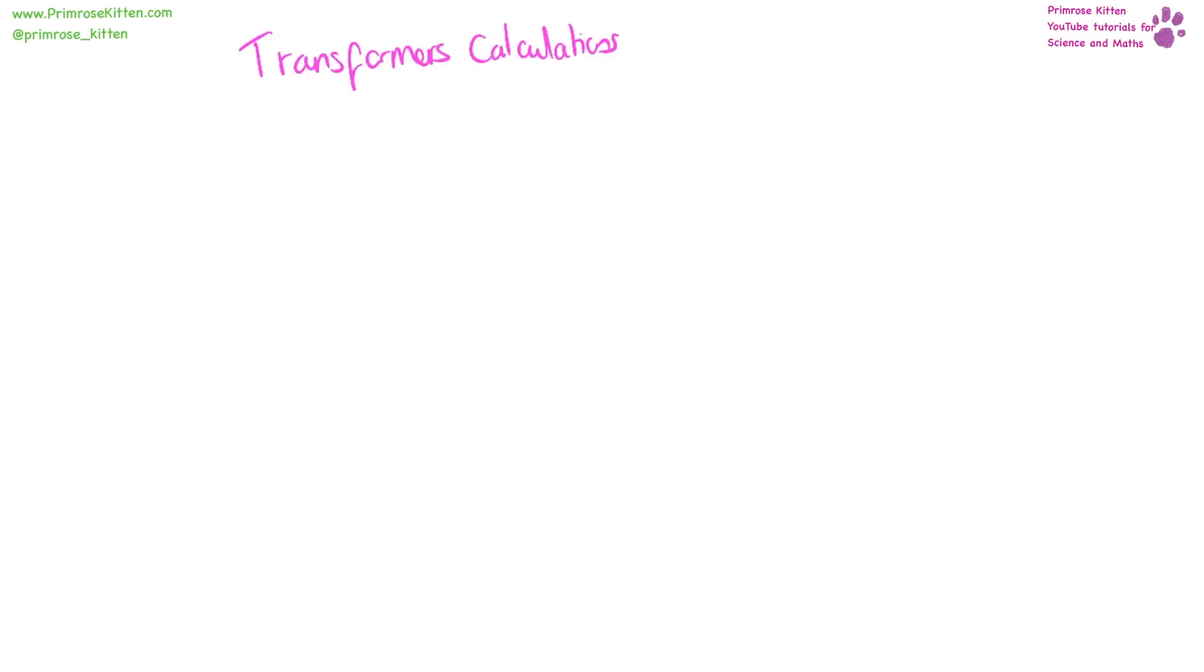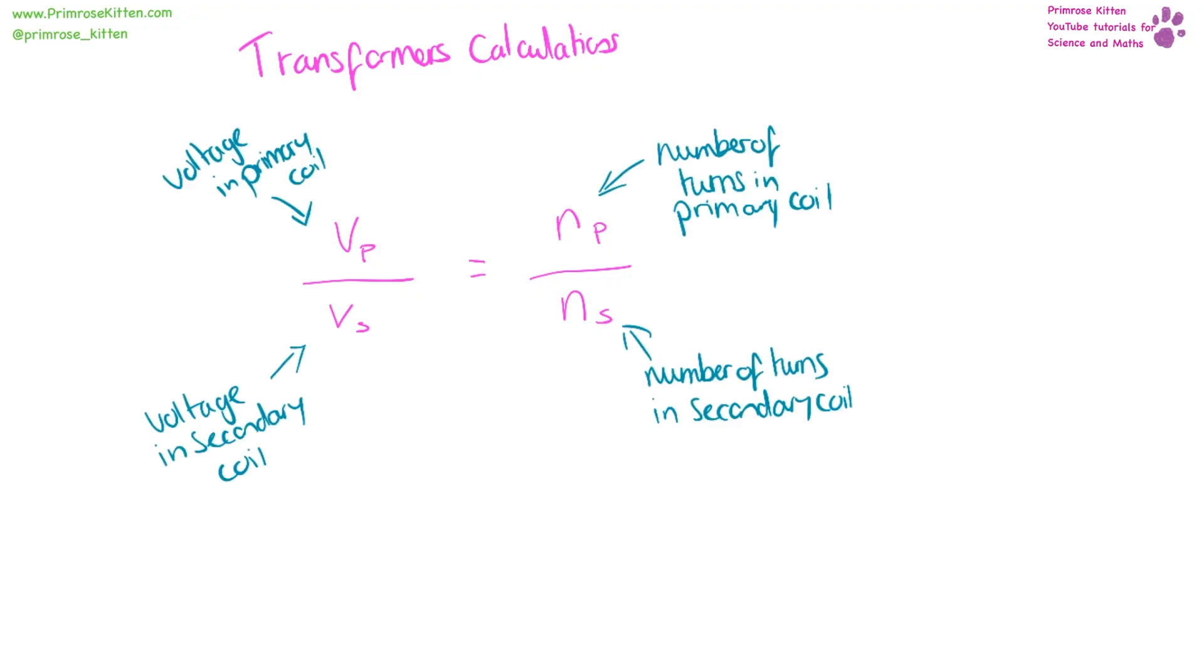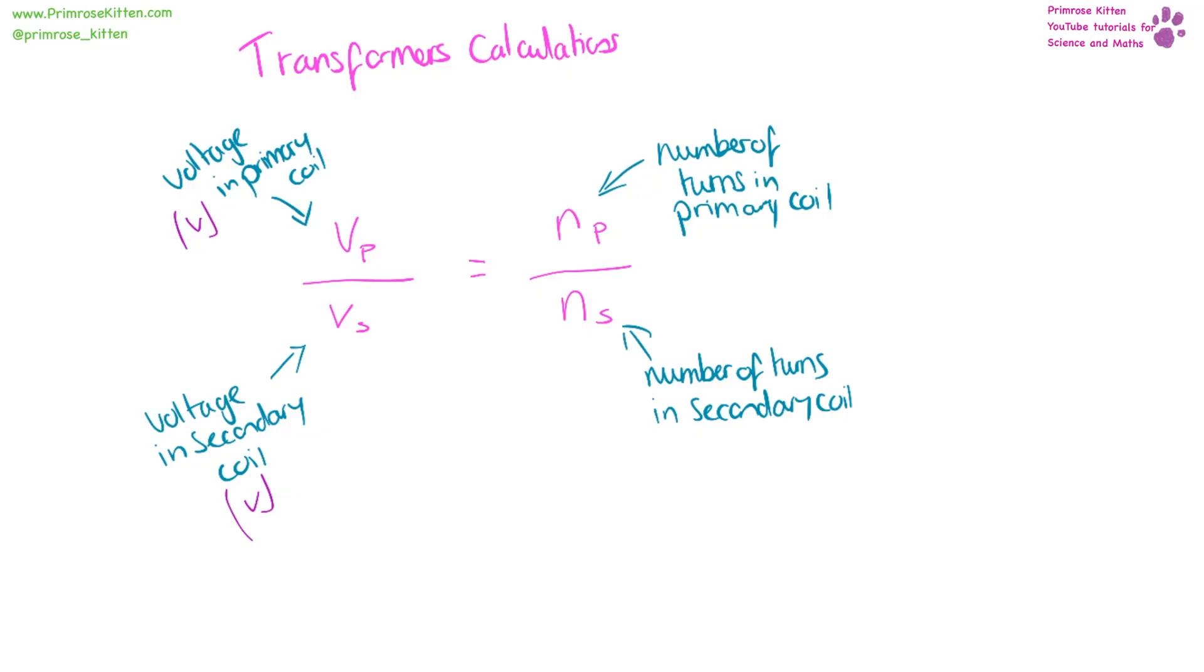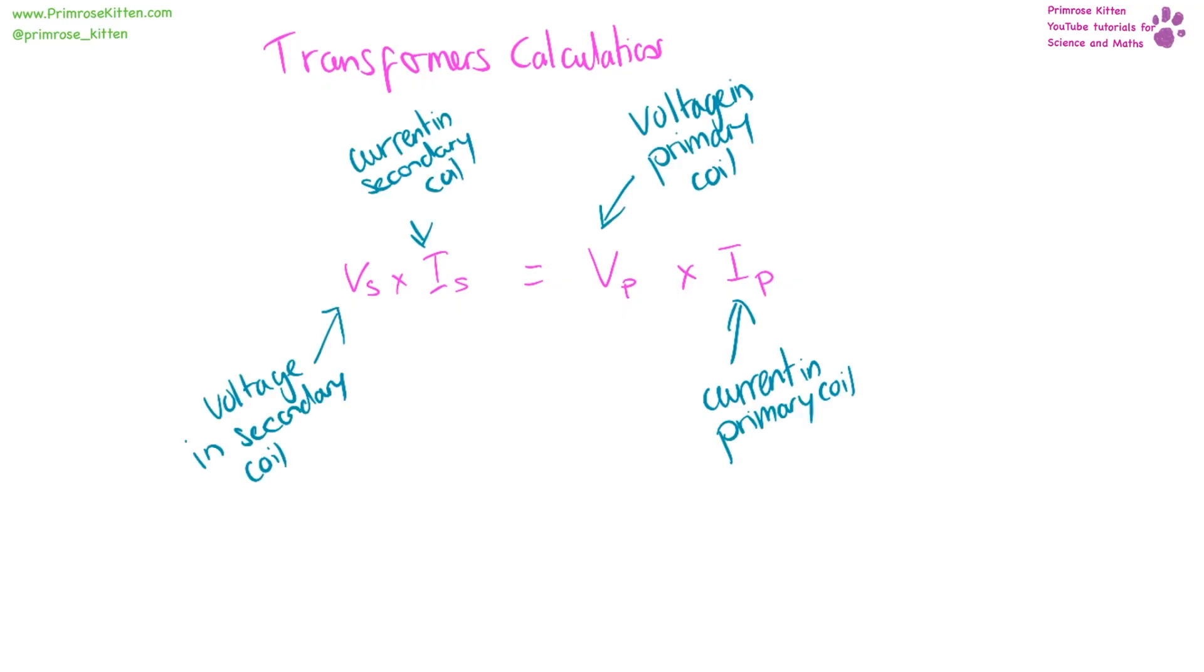When we are looking at transformers calculations, we have voltage in the primary coil divided by voltage in the secondary coil equals the number of turns in the primary coil divided by the number of turns in the secondary coil. Our units for this are going to be for voltage, that is volts, and number of turns doesn't have a unit because it's just a number. You need to know that voltage in the secondary coil times the current in the secondary coil is equal to voltage in the primary coil times the current in the primary coil. And our units for voltage are volts, for current, amps, voltage, volts, current, amps.